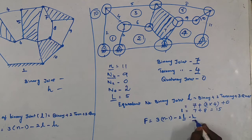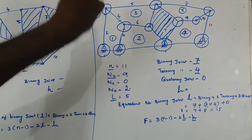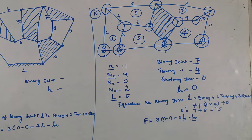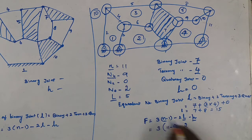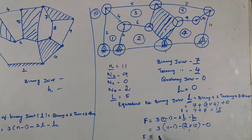Substituting into the mobility formula: F = 3(11-1) - 2(15) - 0 = 30 - 30 = 0. F = 0 means the mechanism is a structure — there is no relative motion. The given chain forms a structure.